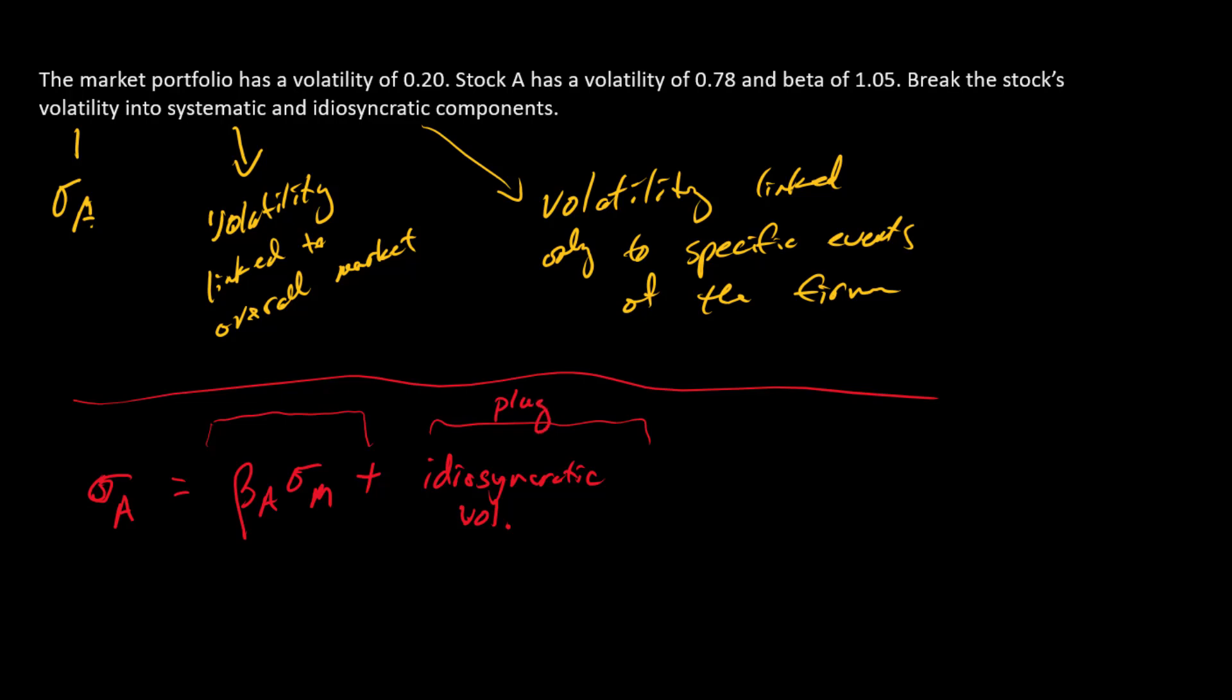All right, so what do we have in the problem? We know that the market portfolio has a volatility of 0.2, so that's going to be sigma M. And the beta of the stock is here, so there's beta. So we can start by filling in this term here.